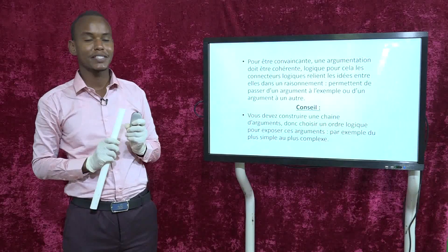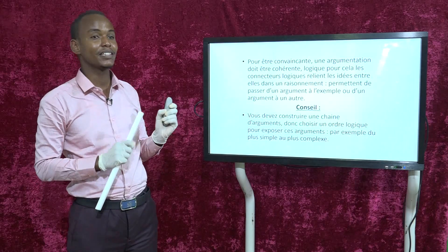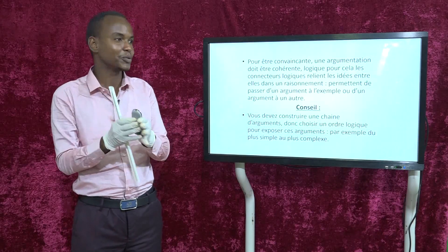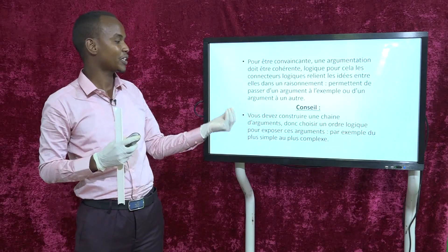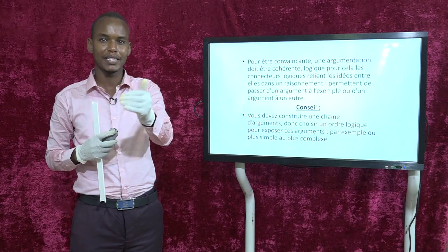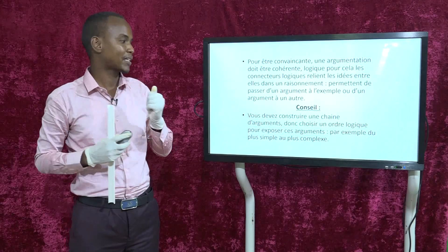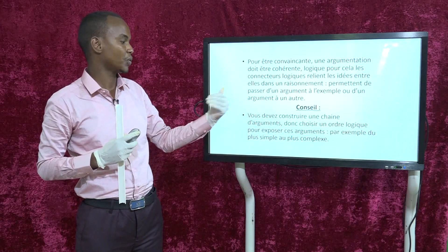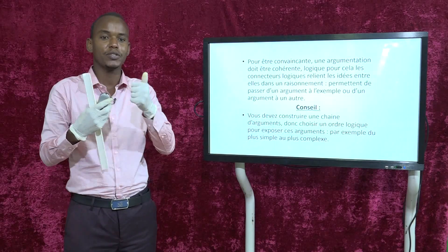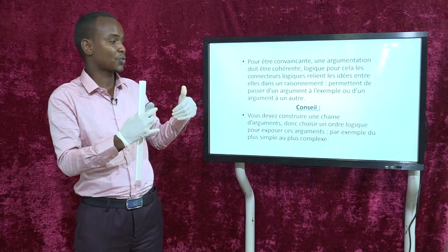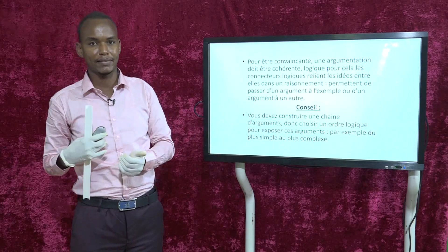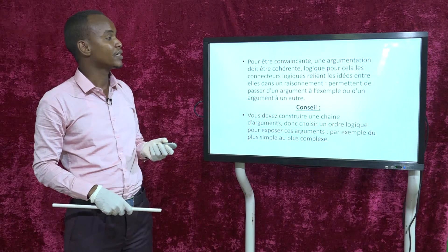Dans le cadre de la production écrite, vous allez être amenés à rédiger un paragraphe argumentatif. Vous devez construire une chaîne d'arguments : repérer et noter les arguments dans la partie brouillon, les classer par ordre logique, puis les exposer sur votre copie finale — par exemple du plus simple au plus complexe.